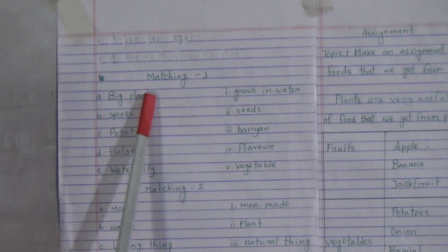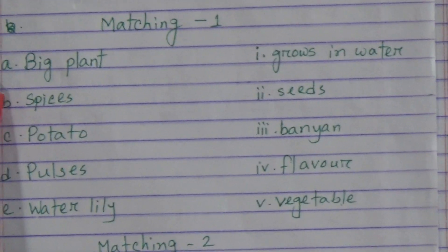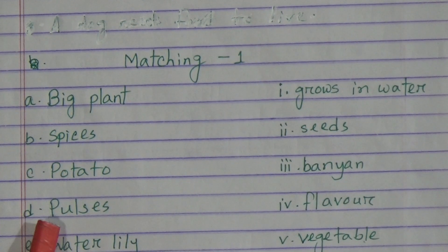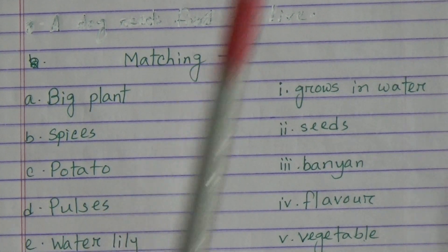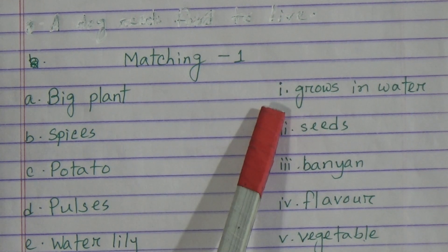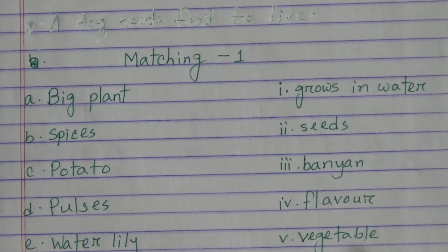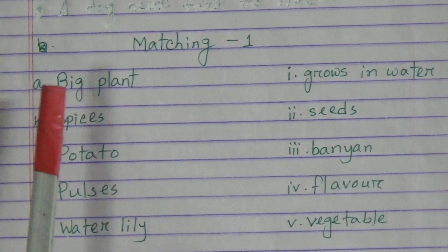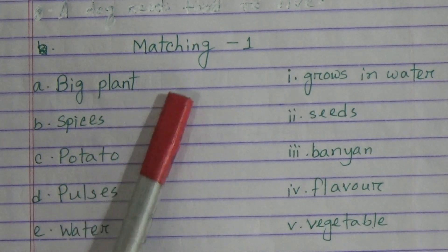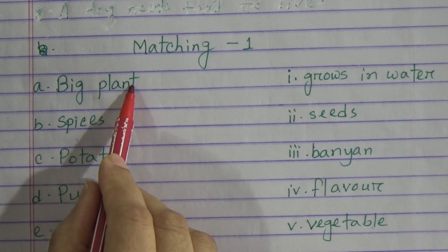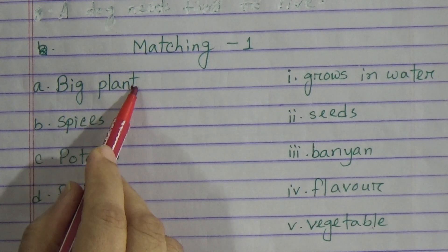First, Matching 1. On the left side: option A — big plant, option B — spices, option C — potato, option D — pulses, option E — water lily. On the right side: option 1 — grows in water, option 2 — seeds, option 3 — banyan, option 4 — flavor, option 5 — vegetables. Option A, big plant, will be matched with banyan — that means number A will be matched with number 3.